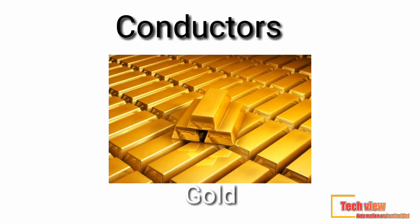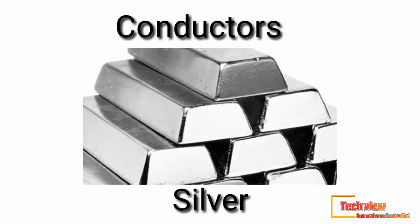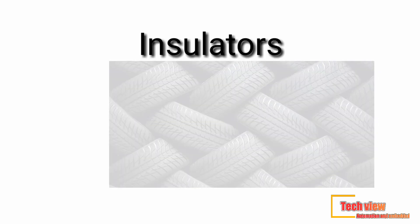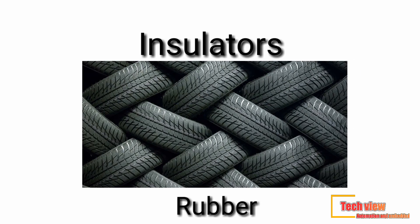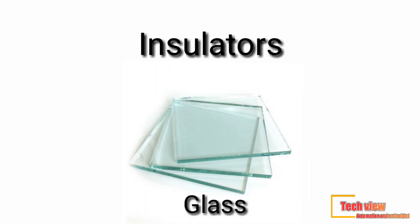The electrical wire used in houses consists of a core made of conducting material like copper or aluminium. The core provides an easy path for the flow of electric current. This core is covered with insulating materials such as rubber, cotton, PVC, and plastic, which provide protection against short circuits and electrical shock.